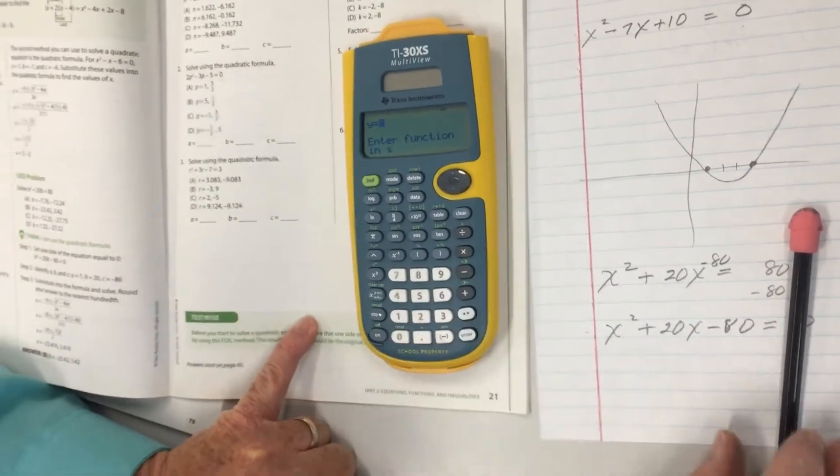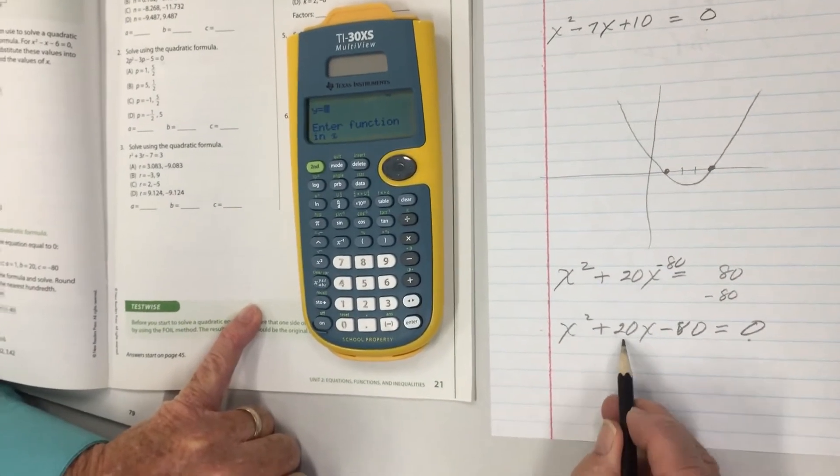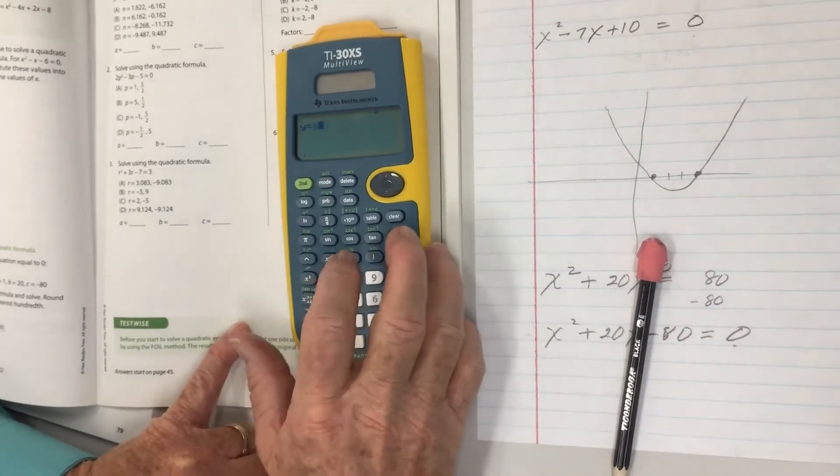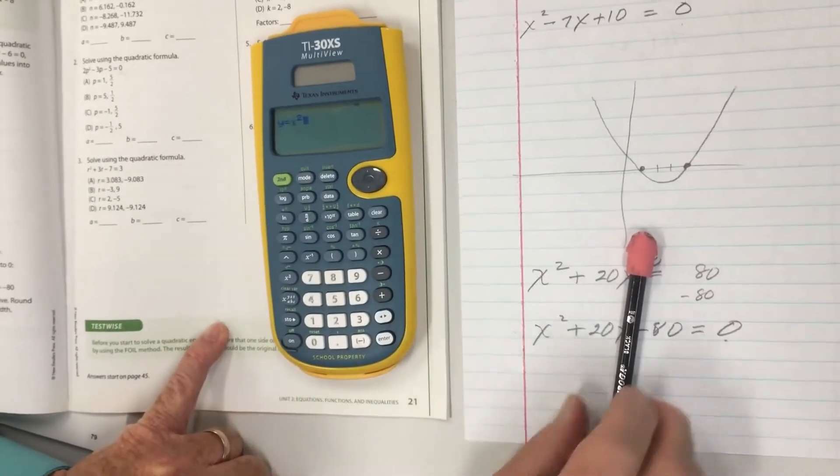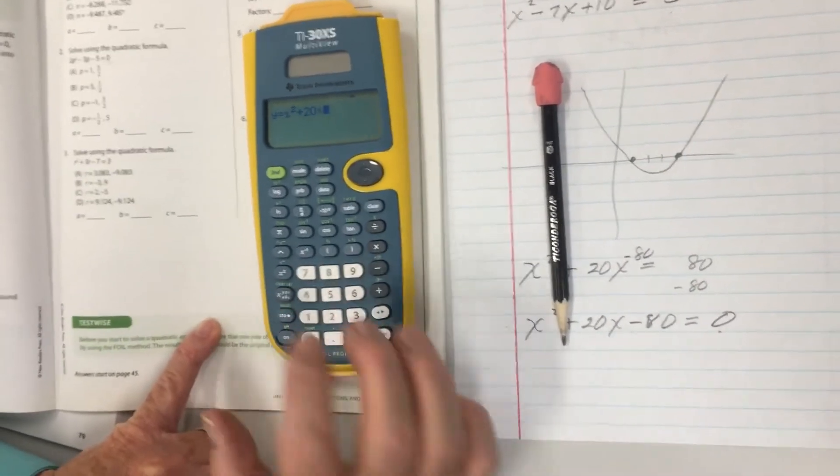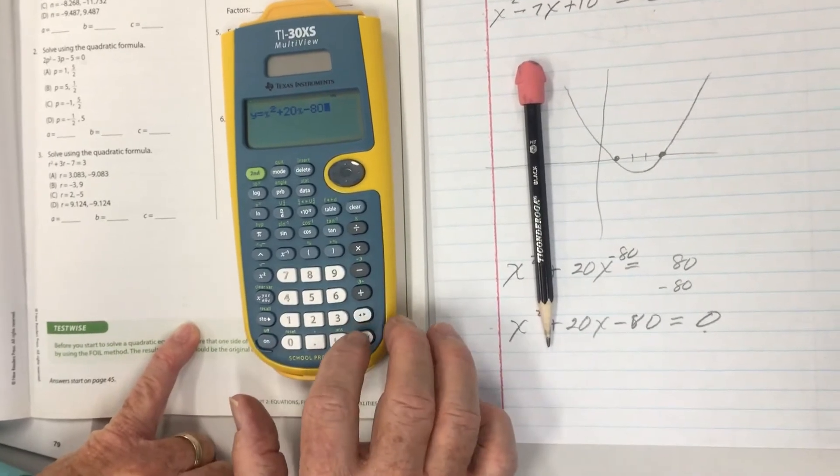I want to go to table. I'm going to put in my equation x squared plus 20x minus 80. So I'll put in x squared plus 20x minus 80 and I press enter, and...